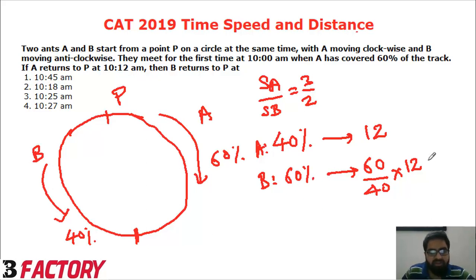But since B is covering this distance, he will take additional 3 by 2 as well because the time of B by time of A is equal to 3 by 2.